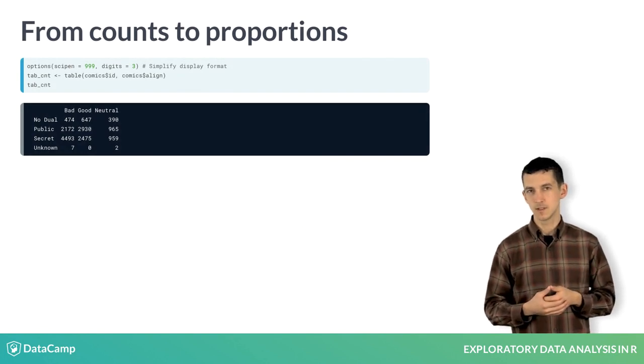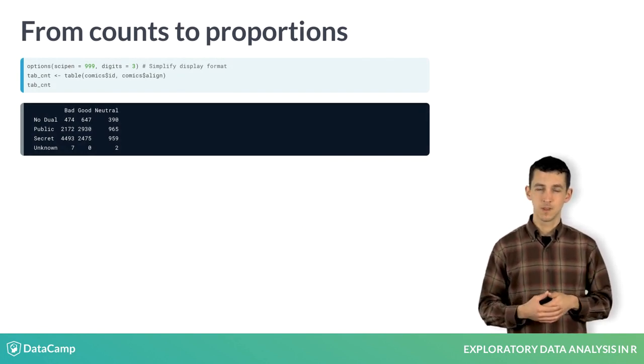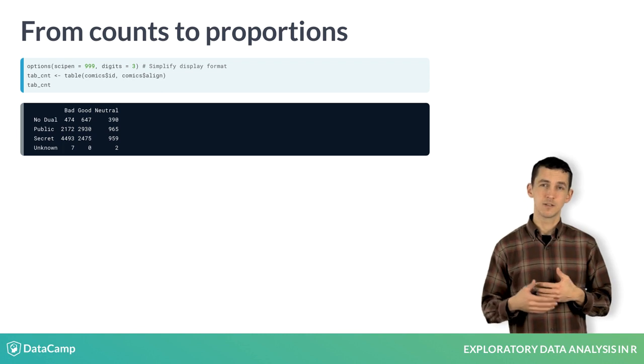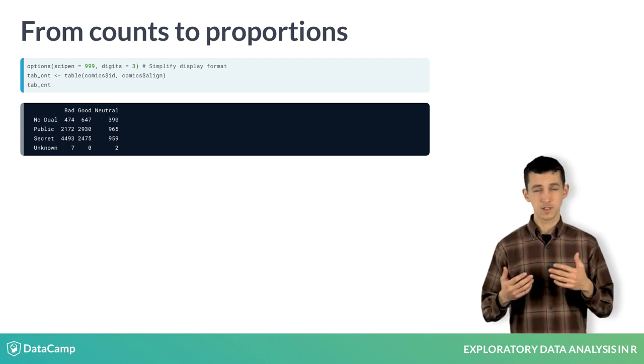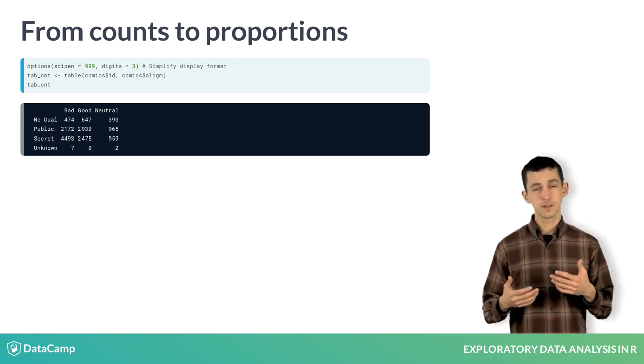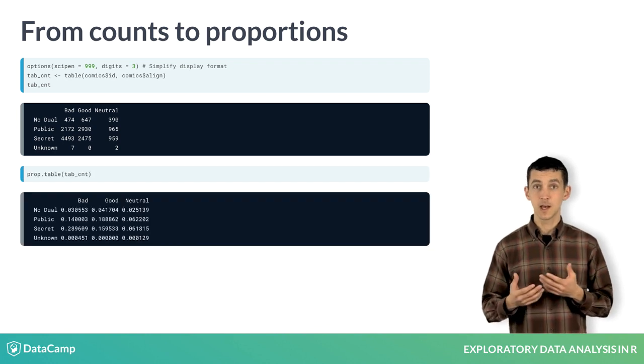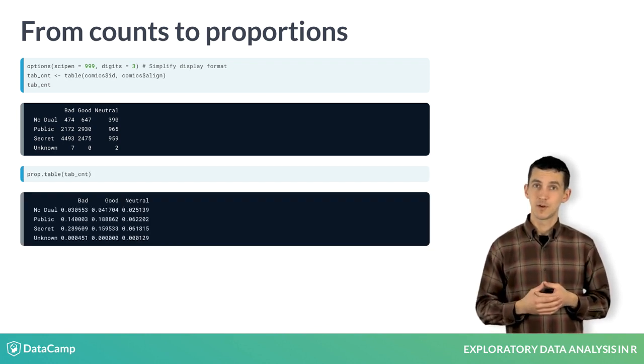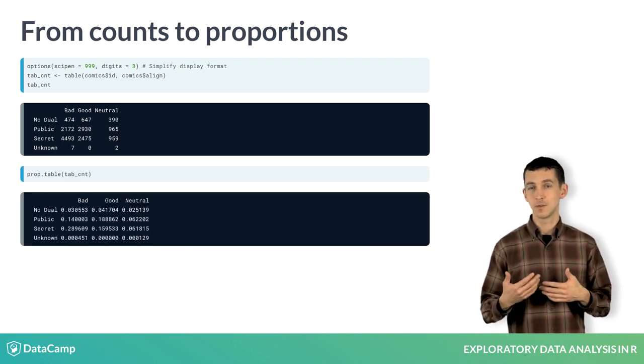Let's return to our table of counts of cases by identity and alignment. If we wanted to instead get a sense of the proportion of all cases that fell into each category, we can take the original table of counts, saved as tab_cnt, and provide it as input to the prop.table function.